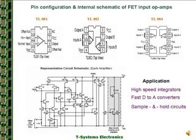The TL081 may be used in applications such as high speed integrators, fast D-to-A converters, sample and hold circuits, and many other circuits requiring low input offset voltage, low input bias current, high input impedance, high slew rate, and wide bandwidth. Also, the pinouts of TL082 and TL084 are shown on the slide; these have 2 and 4 OPAMPs respectively in a single package.